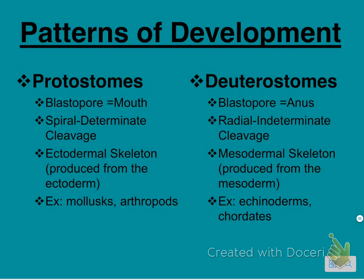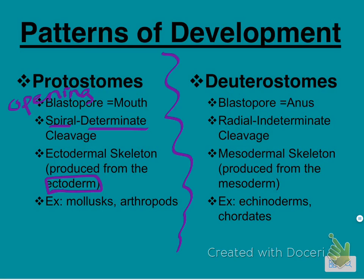There are two patterns of development: protostomes and deuterostomes. In protostomes, the blastopore becomes the mouth; they have spiral determinate cleavage and an ectodermal skeleton — their protection is on the outside, such as mollusks and arthropods. In deuterostomes, the blastopore becomes the anus; they have radial indeterminate cleavage and a mesodermal skeleton. These include echinoderms like starfish, which share characteristics with vertebrates, and all chordates.